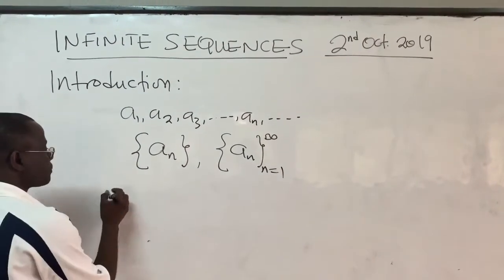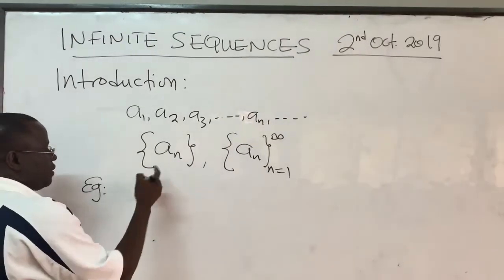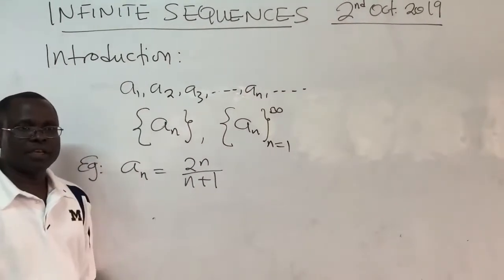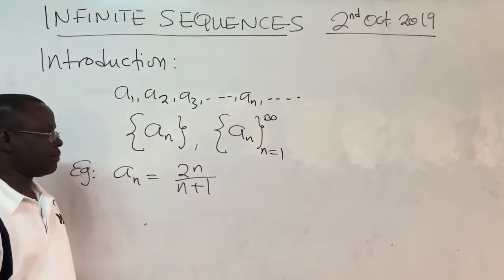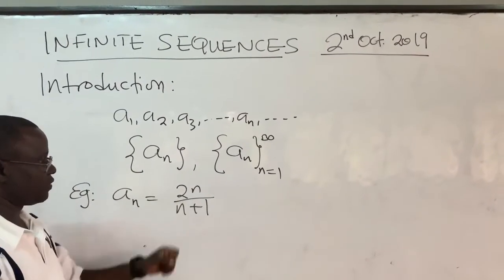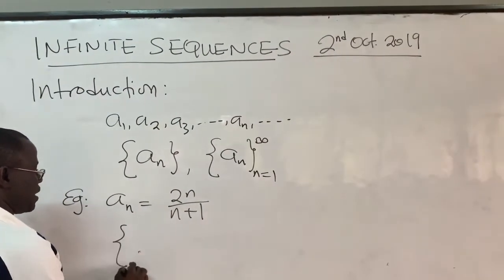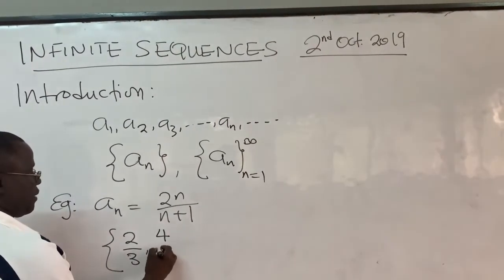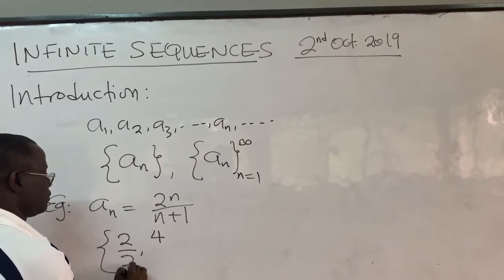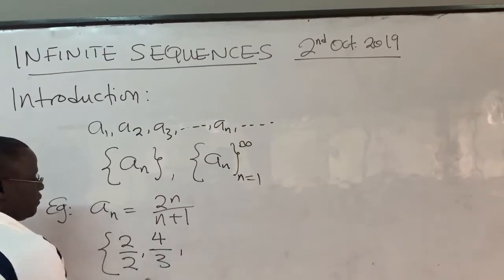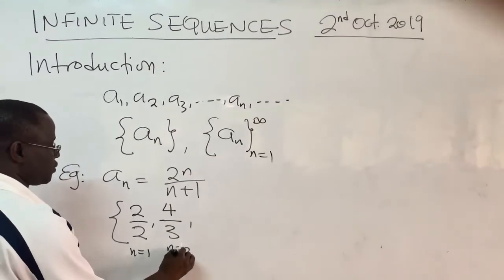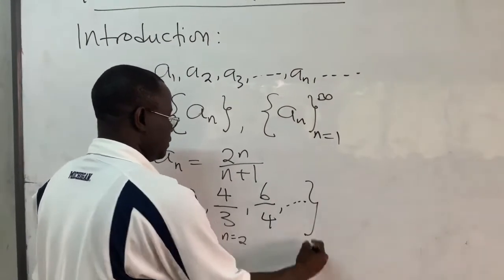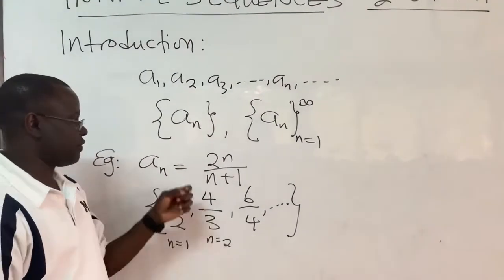For example, if aₙ is given by 2n/(n+1), you can list all the different numbers within this sequence by putting in different values for n. When n=1, you get 2/3; when n=2, you get 4/3; when n=3, you get 6/4, and so on to infinity. These give you the different terms of this sequence.